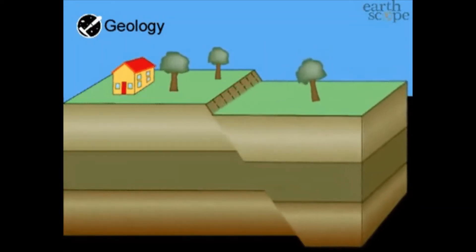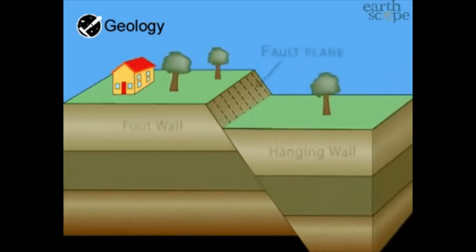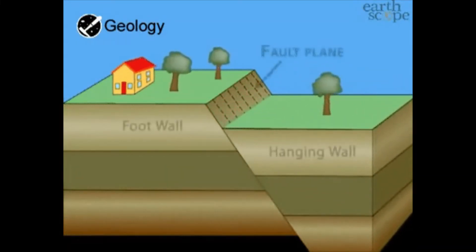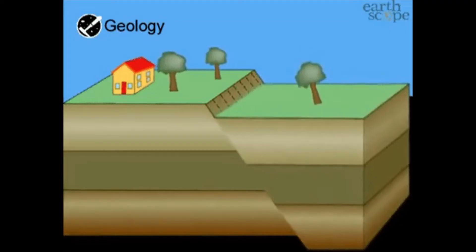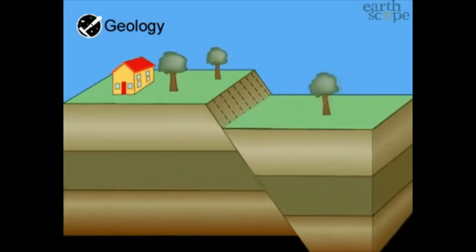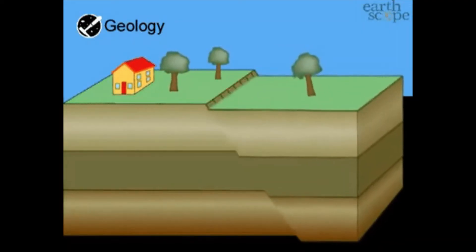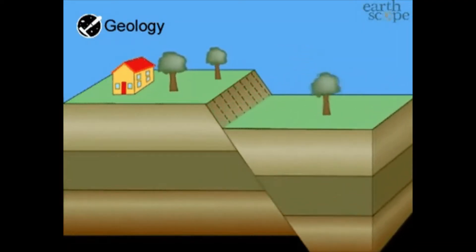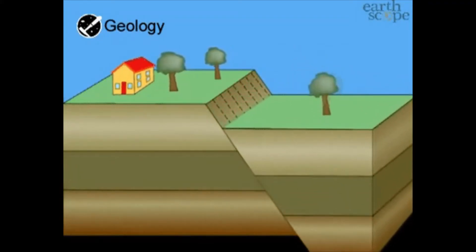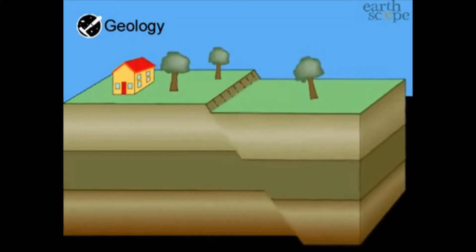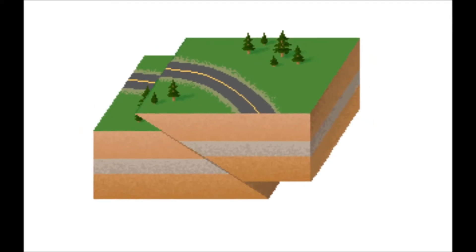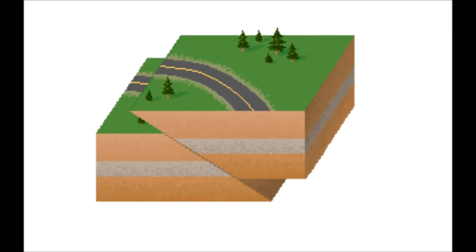The first type is the normal fault, also called the dip-slip fault. They are produced by tensional forces where the hanging wall slides down relative to the foot wall. Normal faults are common and are associated with divergent plate boundaries. A good example is the East African Rift Valley.